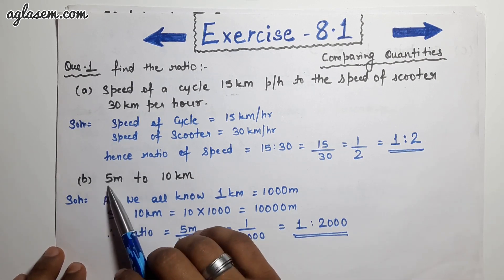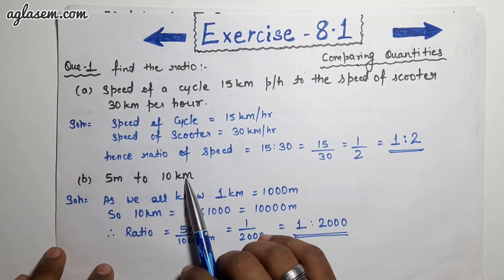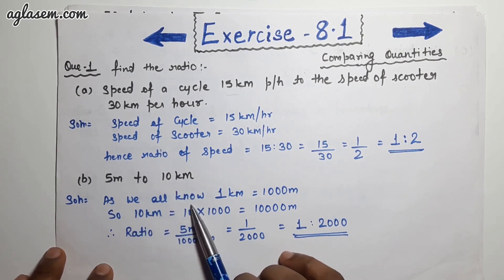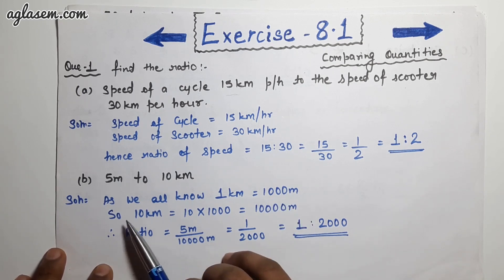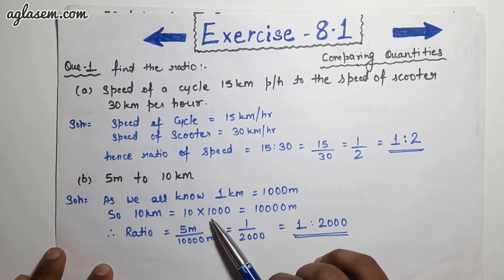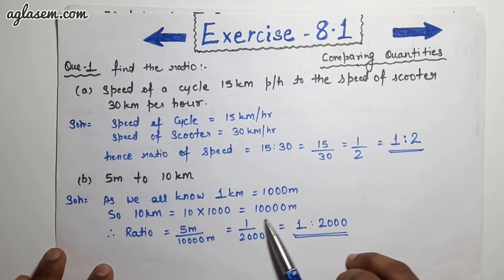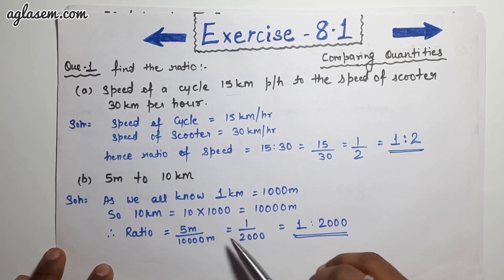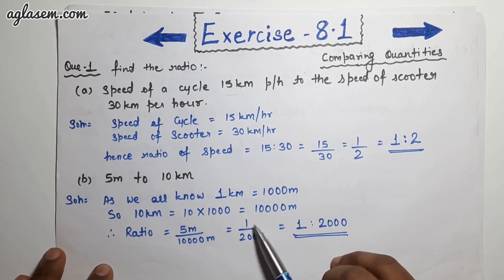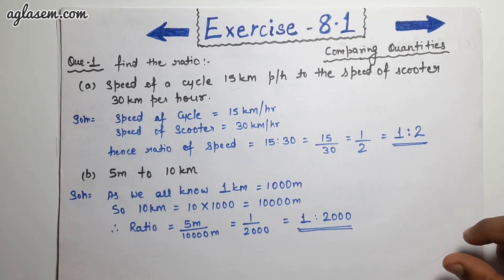Part B says 5 meters to 10 kilometers. We need to convert kilometers to meters first. Since 1 kilometer equals 1000 meters, 10 kilometers equals 10,000 meters. Hence the ratio is 5/10,000 = 1/2,000, so the ratio is 1:2000.